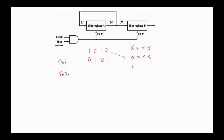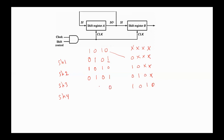After the second shift control, register A has 1 0 X X and register B has 0 1 0 X. After the third shift control, register A has 0 1 0 X and register B has 1 0 1 0. After the fourth shift control, register A is restored to 1 0 1 0 and register B has 0 1 0 1, with the bit circulated back. As you see, we need 4 clock pulses to transfer the contents of register A to register B, and the contents of register A are restored.